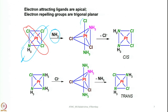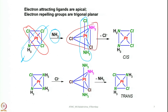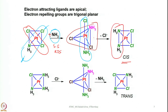The electron-attracting group (ammonia side) goes to the apical position, while the two chlorides and the other ammonia form the trigonal plane. In the rate-determining slow step, ammonia enters. Once chloride leaves, the fate of the molecule is already decided — anything in the trigonal plane is going to be cis to the other groups in that plane. As a result, we get a cis isomer.